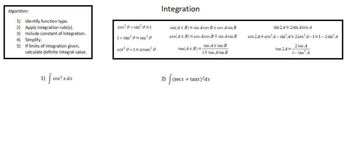I've copied the trigonometric identities from the formula booklet into this screen. These are at the top of the screen, and we'll use a couple of these in our two examples, beginning with number one: the integral of cosine²x with respect to x.